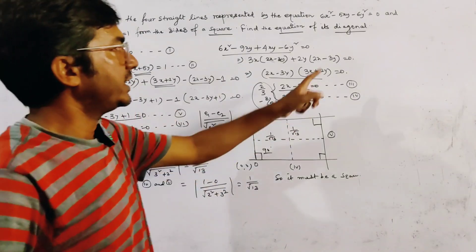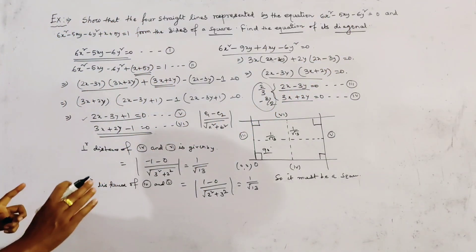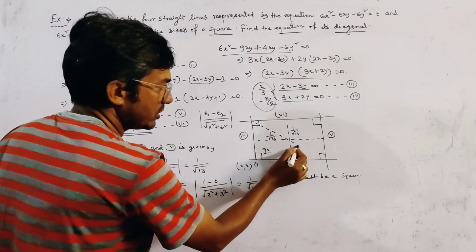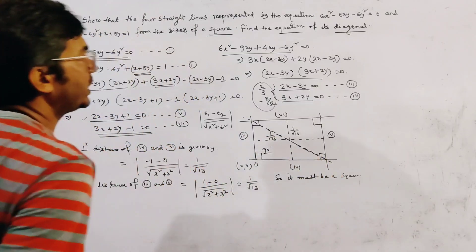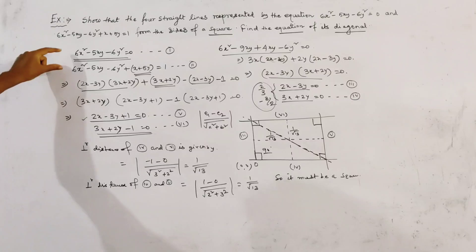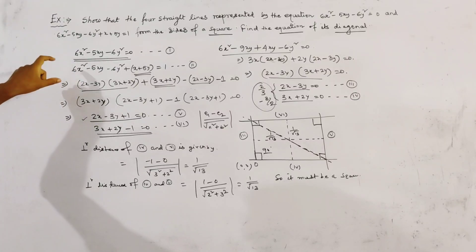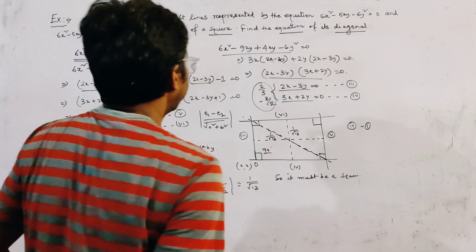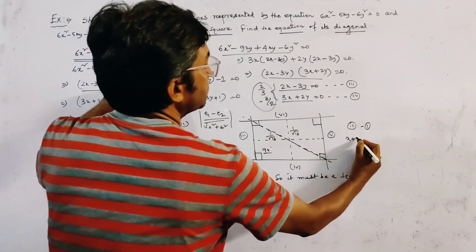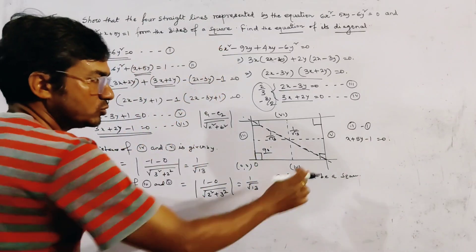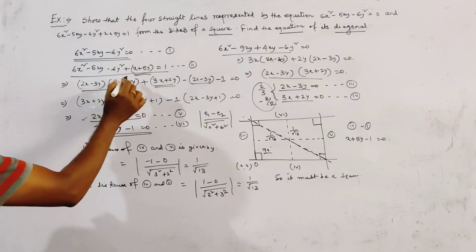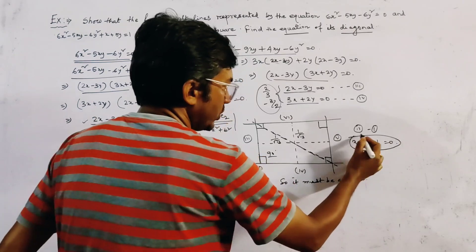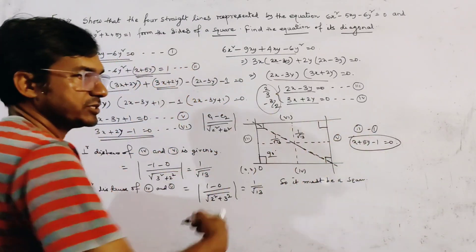Now we find the equations of the diagonals. We can easily find the diagonal not passing through the origin using equation 2 minus equation 1. The terms that remain give x + 5y - 1 = 0. This is one diagonal, and it does not pass through the origin because the constant term is present.